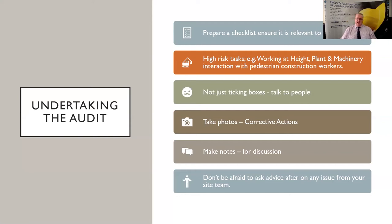Looking at the high-risk tasks — those that generate possibly the worst outcomes in the industry, such as working at heights, plant machinery and pedestrian construction workers — these need to be highly prioritised on the checklist. Corrective actions should be instantaneous if you find a problem, because these are critical and shouldn't be left until the end of the audit. In some cases it may be a stop-work and put a corrective action in place.